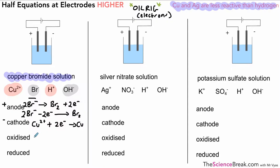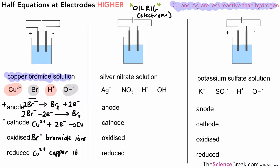In terms of oxidation and reduction — OIL RIG, oxidation is loss, reduction is gain. It's the bromide ions that lost electrons, so they are the particles that have been oxidized. In terms of reduction, we want to know what gained electrons — that's the copper. Copper gained two electrons, so we say copper has been reduced. That's our first example; if you feel confident you might want to have a go at the second one yourself.